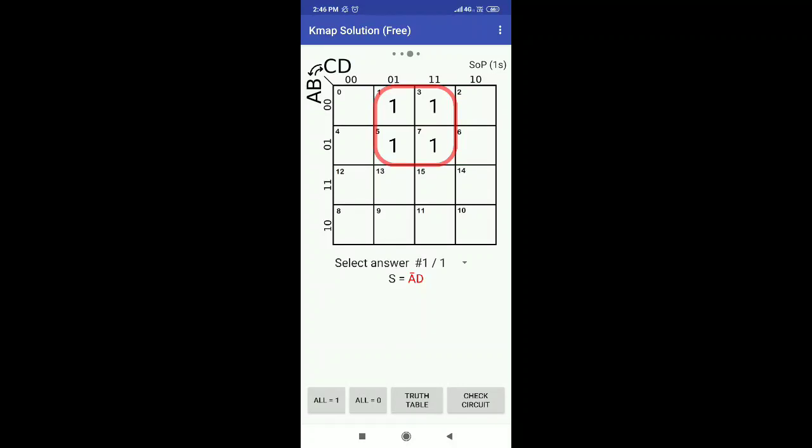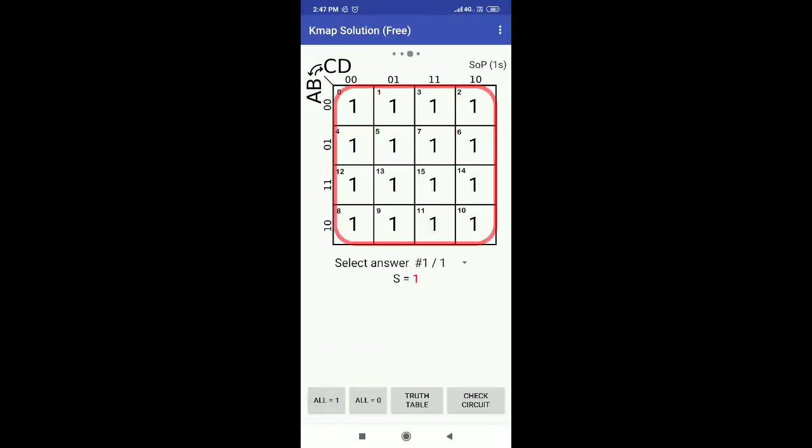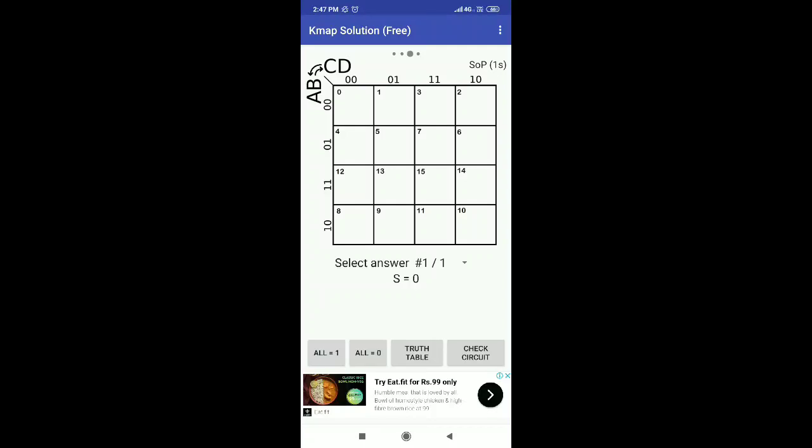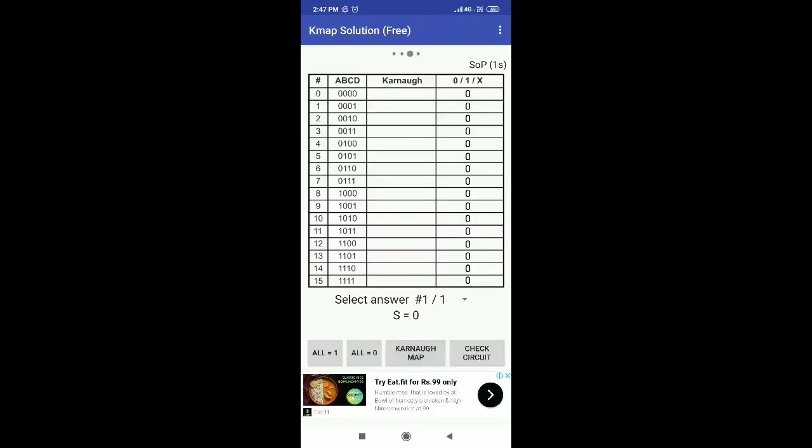On the bottom of your screen, you can see the option all equals to one. If you click on that, all the cells will be filled with ones. If you click on the second option, all equals to zero, all the cells will become empty. The third option generates the truth table.